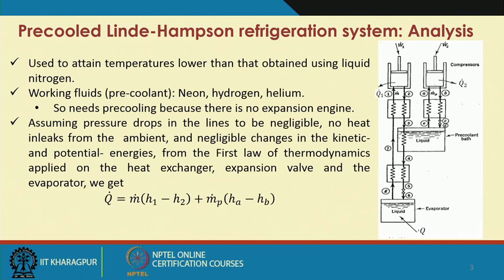This is a modification done to the simple Linde-Hampson in order to achieve a lower temperature than what we can achieve using liquid nitrogen. Here the working fluids are neon, hydrogen, and helium, which are what we call the pre-coolant. The pre-coolant is pre-cooling the actual process fluid. This pre-cooling is done because we are not using any expansion engine — had we been using an expansion engine, we would not have needed this kind of pre-cooling.